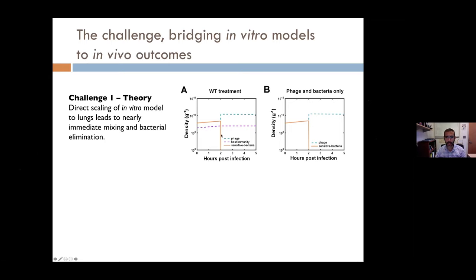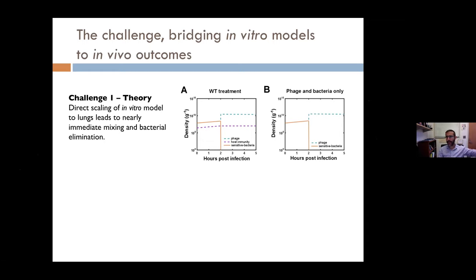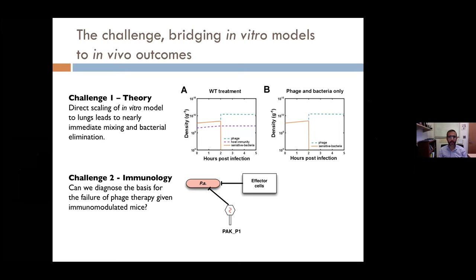Initially, our models predicted a miracle cure—even without the immune system, the bacteria seemed to immediately clear. The reason is that at the adsorption rates and burst sizes expected, this many bacteria would immediately lead to clearance—which clearly is not the case. There was a gap in terms of time scales. The models developed in a well-mixed chemostat are not exactly how things work in the lungs of a mouse: if bacteria are killed on one lobe by a phage, that doesn't mean the phage immediately gains access to bacteria in the other lobe.